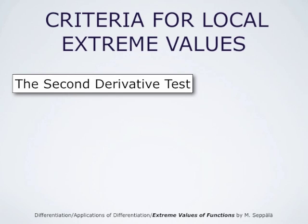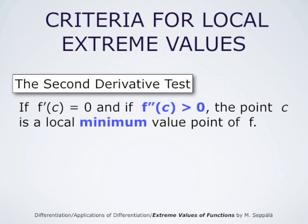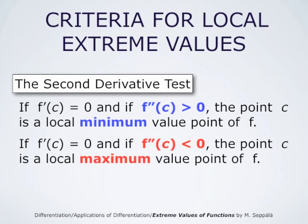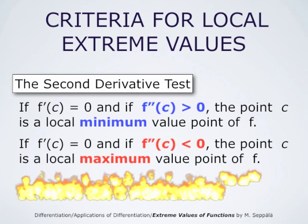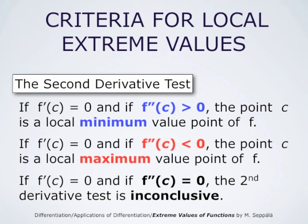These observations can be summarized as the second derivative test. If f' at c is 0 and f'' at c is positive, the point c is a local minimum value point of f. If f' at c is 0 and f'' at c is negative, the point c is a local maximum value point of f. And if f' at c is 0 and f'' at c is also 0, this second derivative test is inconclusive. If this is the case, we must take a closer look at the derivative f' and figure out whether it changes its sign, and if it does, then how.